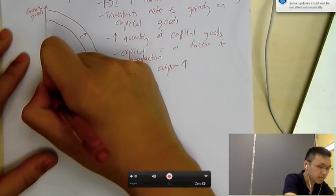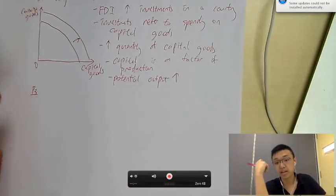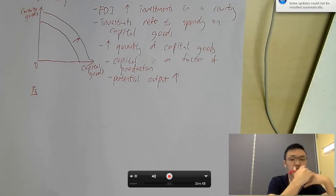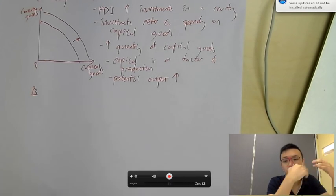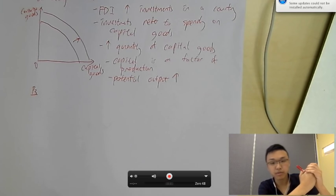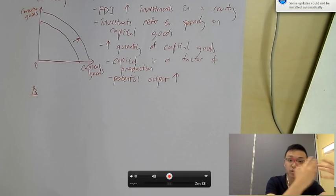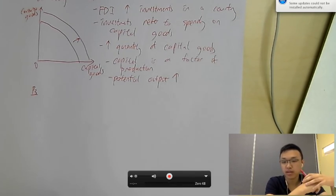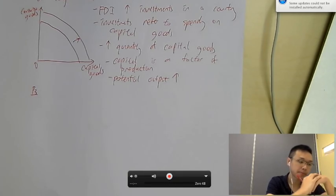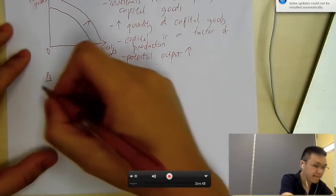Because FDI often generates negative externalities. So, you want to find an article where it talks about how FDI creates pollution, which damages health. That sort of thing. And then, you draw the market failure diagram to show that.